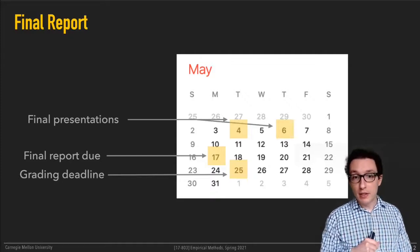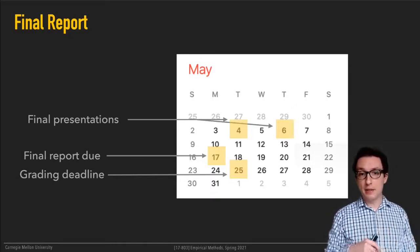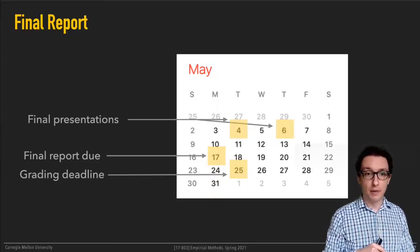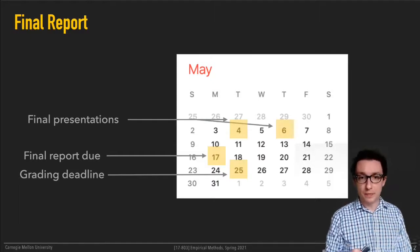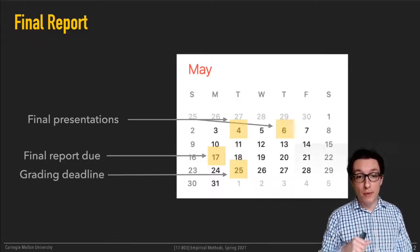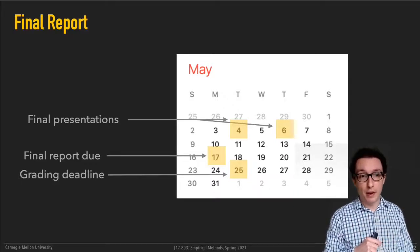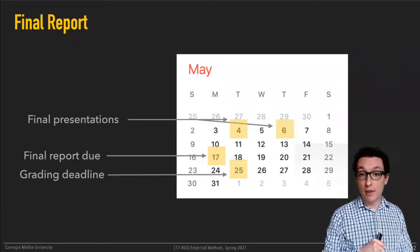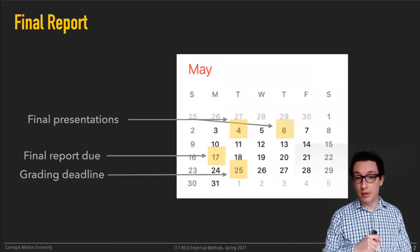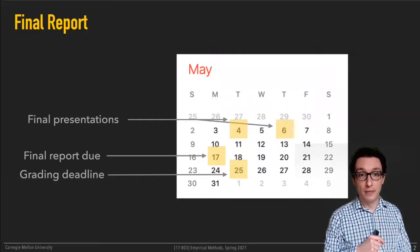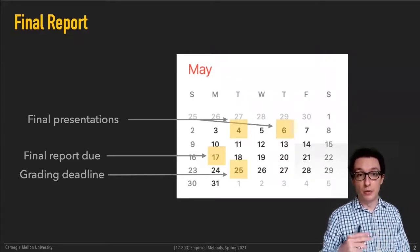I looked this up before class — the final grading deadline appears to be May 25th, when GMU grades have to be entered in the system. If that's correct, I propose you submit the final reports on the 17th — the Monday a week before — which gives me just about enough time to grade them and gives you at least a week after the presentations to incorporate feedback.